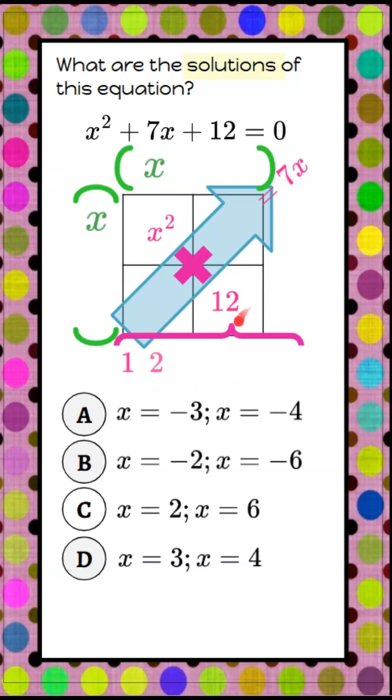So we know that the factors of 12 are 1, 2, 3, 4, 6, and 12. So these six numbers are divided into 12 with no remainder.